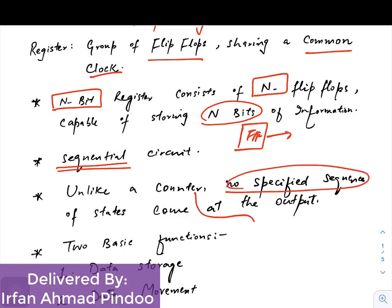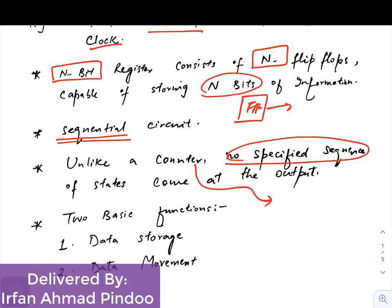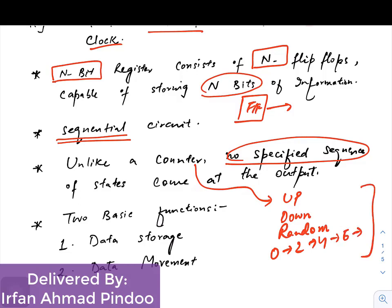When we discussed counters, they followed a certain sequence — whether it was an up counter, a down counter, or a random counter. Even in the random case, the sequence was given in the design problem. The key difference is that counters follow a specific sequence, but registers do not follow any particular sequence.